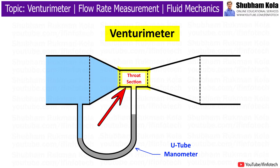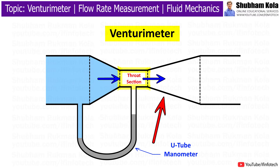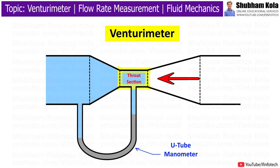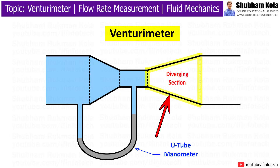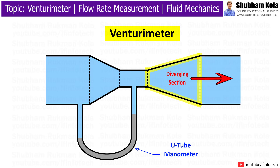The throat section is the narrowest section of Venturimeter. It is a cylindrical section with a constant diameter that connects the converging and diverging sections. The pressure of fluid at this point is lowest and its velocity is highest. The diverging section is the outlet section of Venturimeter where the fluid exits the device. It has gradually increasing diameter.